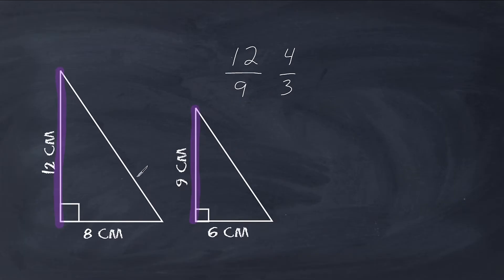In order for this to be a similar pair of triangles, the same thing has to be true for the corresponding bases of our triangle. So let's take 8 and compare it to 6. So we're going to take 8 to 6 and then we're going to simplify this, which would be 4 to 3.